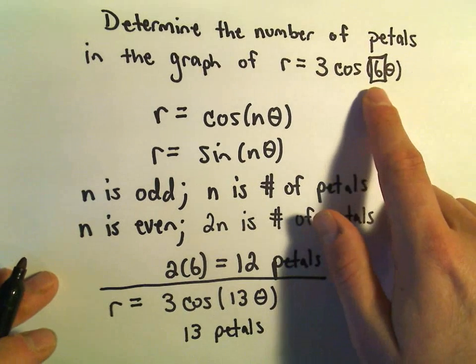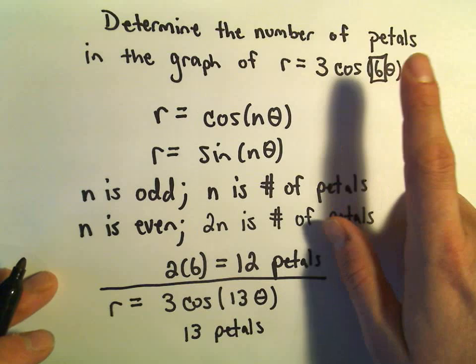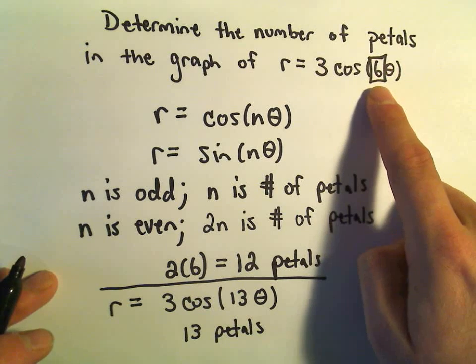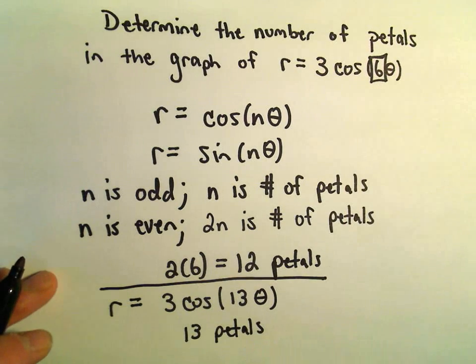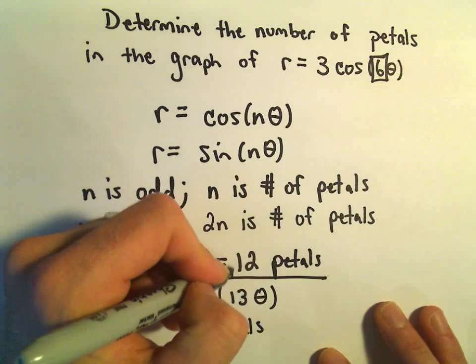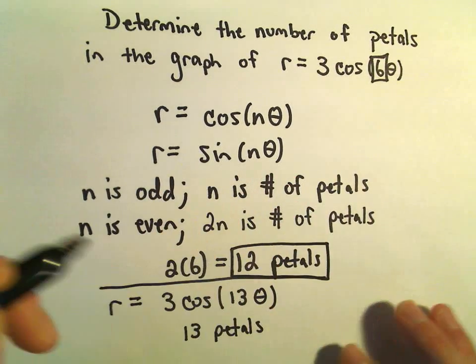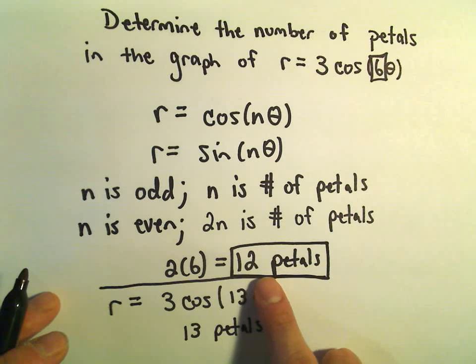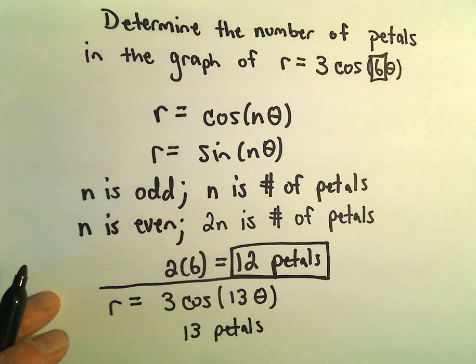So that's all you have to do. Just look at the number in front of theta. If it's even, you double it. If it's odd, you leave it alone. And that will tell you the number of petals. But again, in our example, since we had 6 theta, we would end up getting 12 petals total when we graph it.